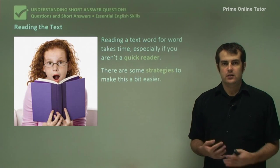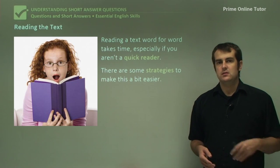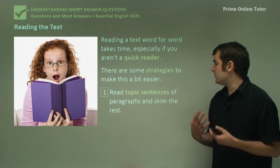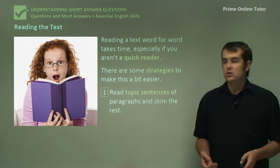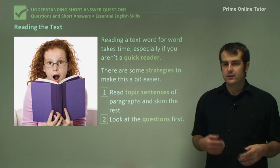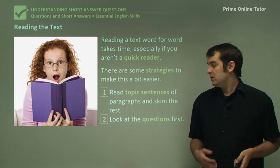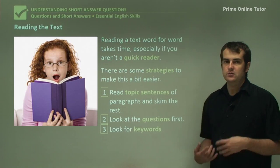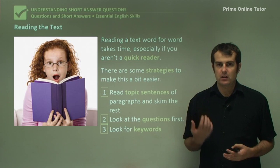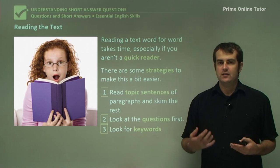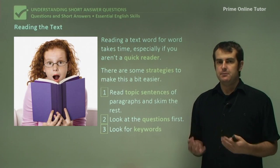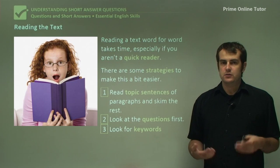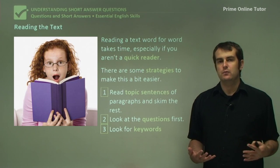I'm a strong believer that you don't necessarily have to read everything word for word. For instance, you can read the topic sentence of paragraphs and skim the rest. You can look at the questions first, although this can lead you into trouble occasionally if you don't do it the right way. Or you can look for keywords within the text, or basically look for sections which stand out — key pieces of description or ideas that you pick up as you skim read.